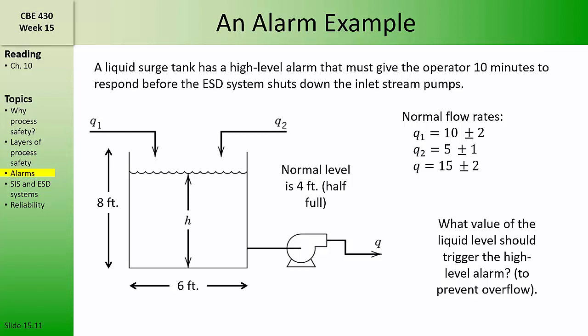Let's consider that under normal operating conditions, it would not be possible for Q1 to be outside of the range of 10 ± 2, and that Q2 would not be outside of the range of 5 ± 1.